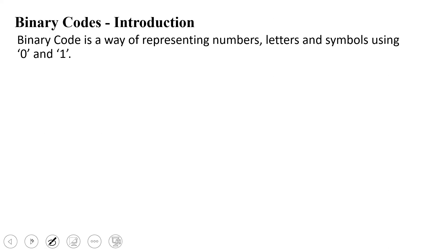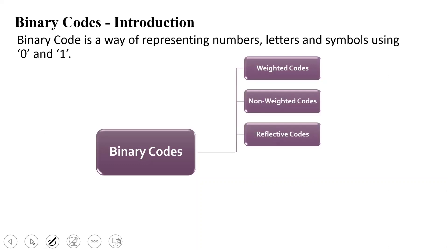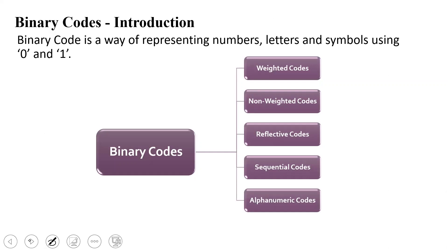Binary code is a way of representing numbers, letters, and symbols using zeroes and ones. There will be a classification. The classifications are: weighted code, non-weighted code, reflective code, sequential code, alphanumeric codes, and error-detecting and error-correcting codes. In this video, all the codes will be covered under these classifications.